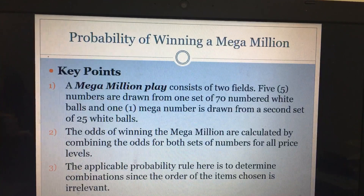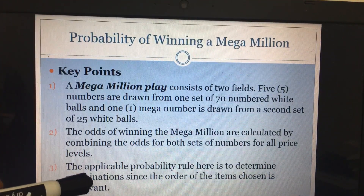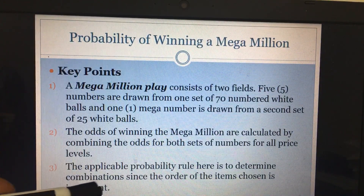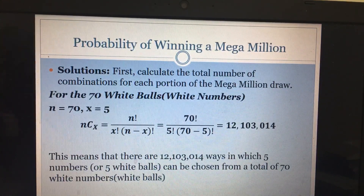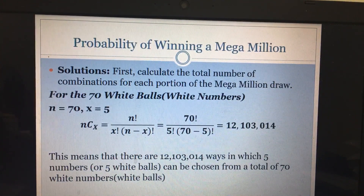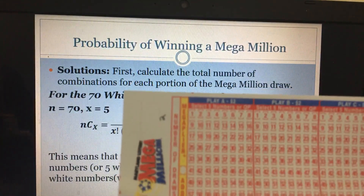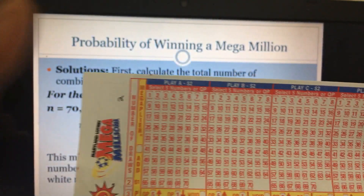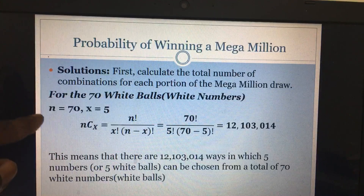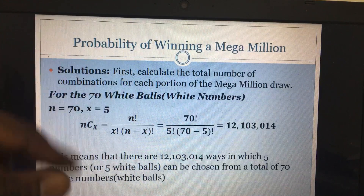We're going to use the combination rule because combination does not require a specific order, unlike permutation. First, let us get our sample space — the total number of combinations. For the white balls, there are 70 of them and we need to select 5, so n = 70 and x = 5.